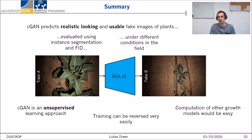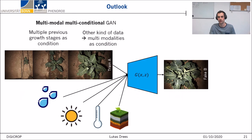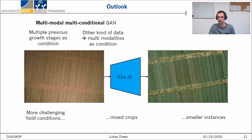Looking into the future, we will try to predict growth from multiple previous stages for an even more realistic outcome. Moreover, our work is based on the assumption that all external factors are expressed in the shape of the plant, which is not always true. There is a variety of influences such as weather, soil quality, fertilization, and seed density which directly or indirectly affect the phenotype of the plant. Therefore it is our goal to add some of these other influencing factors as additional conditions to achieve more reasonable results. It is also planned to generate even more complex fields, such as images with many small instances and fields with mixed cropping.